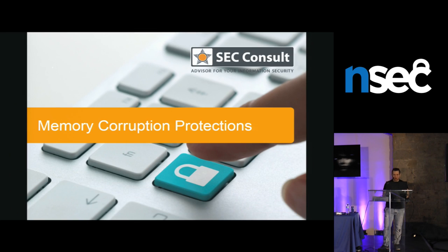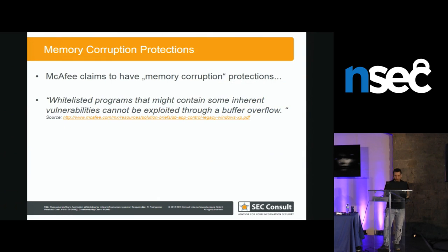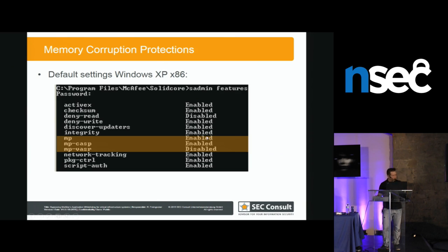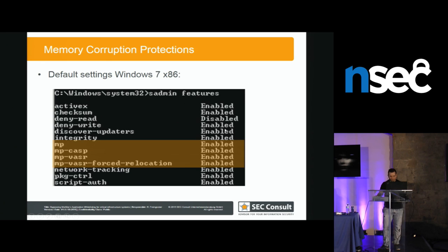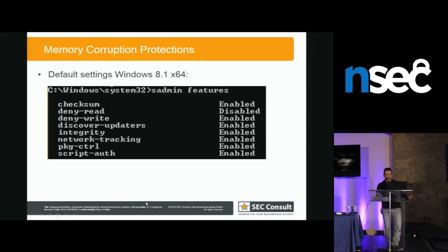But there are some memory corruption protections — we should not be able to exploit it. On Windows XP, memory protections are enabled: CUSP and BUZZER — BUZZER is disabled on XP but on Windows 7 everything is enabled along with forced relocation. On Windows 8.1, everything disappeared — no memory protections on 8.1.